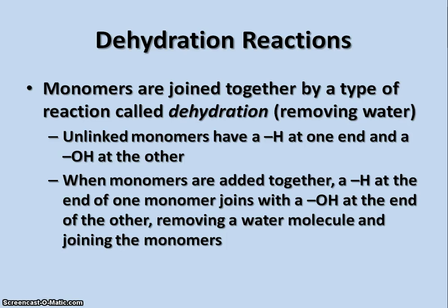The monomers are joined together by a type of reaction called dehydration. Dehydration means removing water from something. Unlinked monomers have a hydrogen at one end and a hydroxyl group at the other. When you join the monomers together, the hydrogen on one monomer joins with the hydroxyl group at the end of the other, removing that water molecule and joining the monomers together.